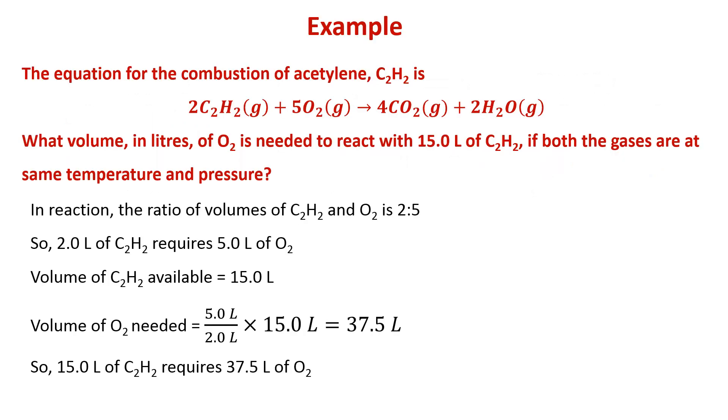Let's try to understand this law with an example. The equation for the combustion of acetylene C2H2 is 2C2H2 gaseous plus 5O2 gaseous gives 4CO2 gaseous plus 2H2O gaseous. What volume in liters of oxygen is needed to react with 15.0 liters of C2H2 if both the gases are at same temperature and pressure? In the reaction we can see that the ratio of volumes of C2H2 and O2 is 2 is to 5. So 2.0 liters of C2H2 requires 5.0 liters of O2.